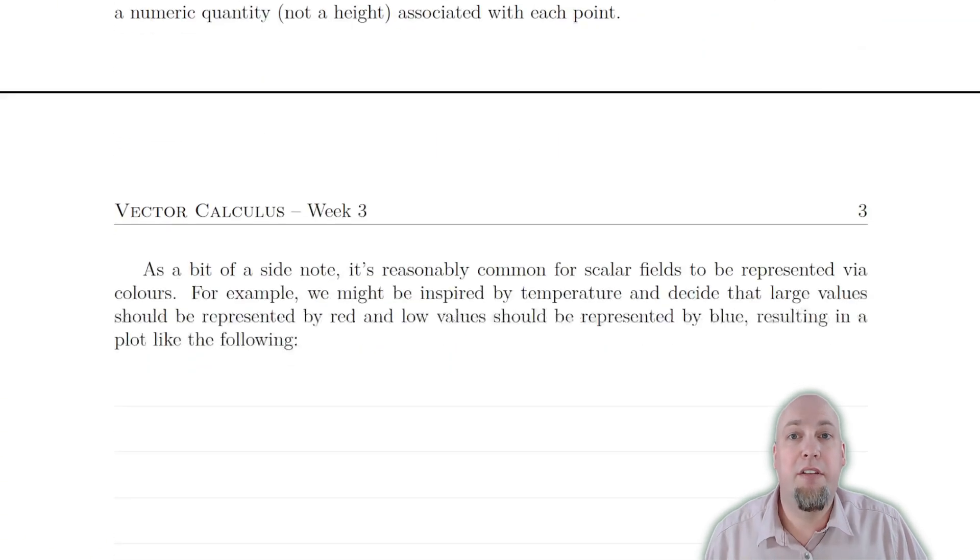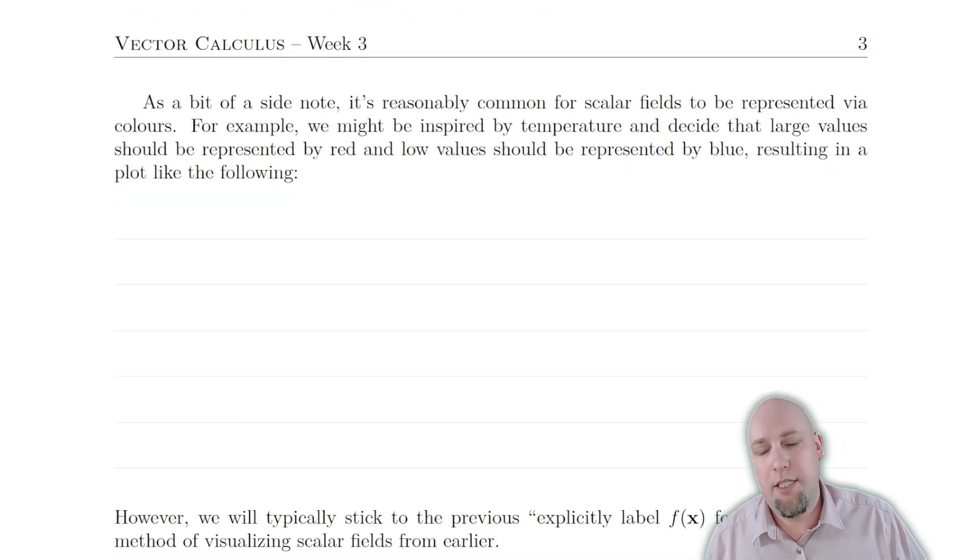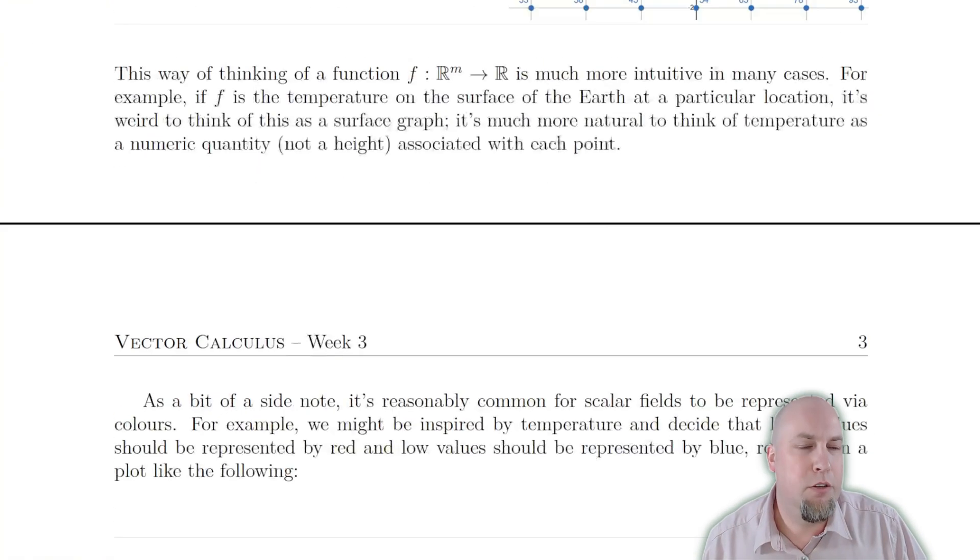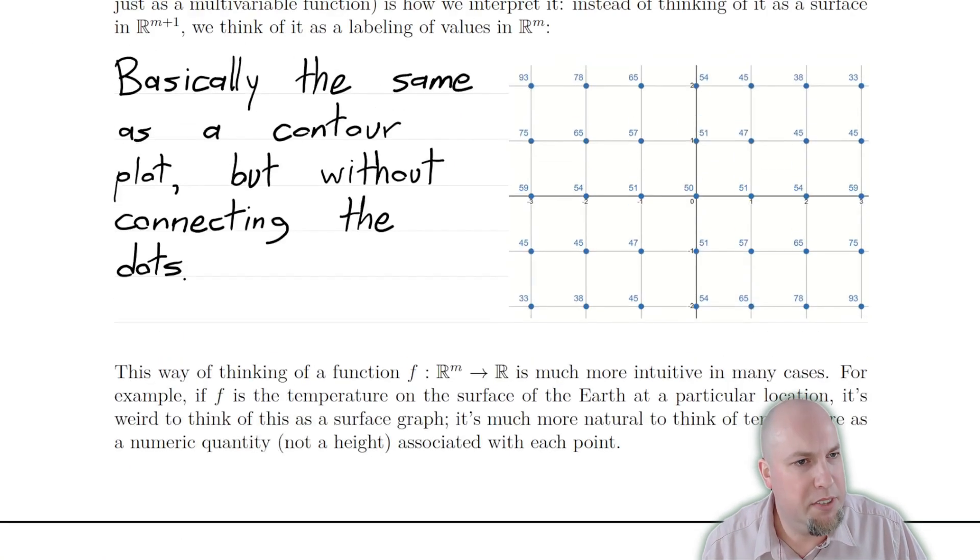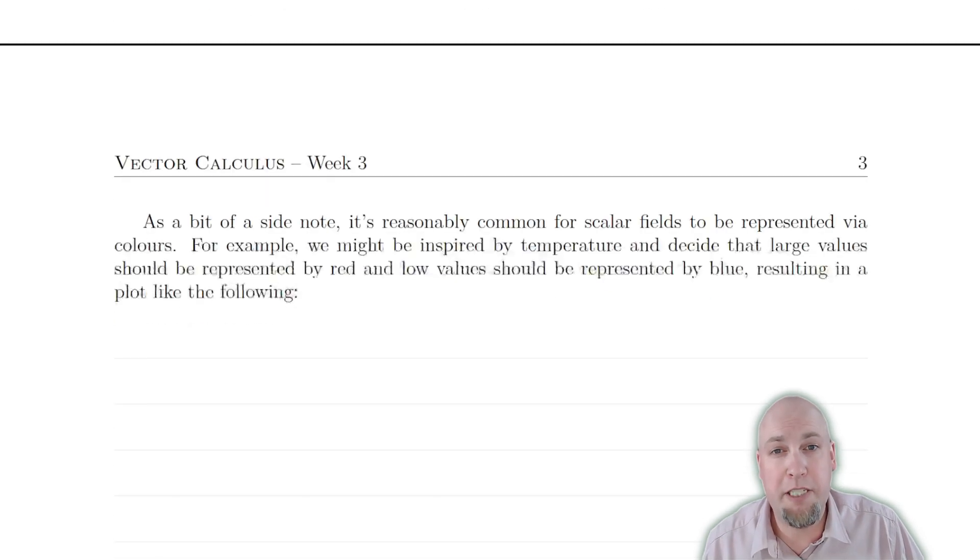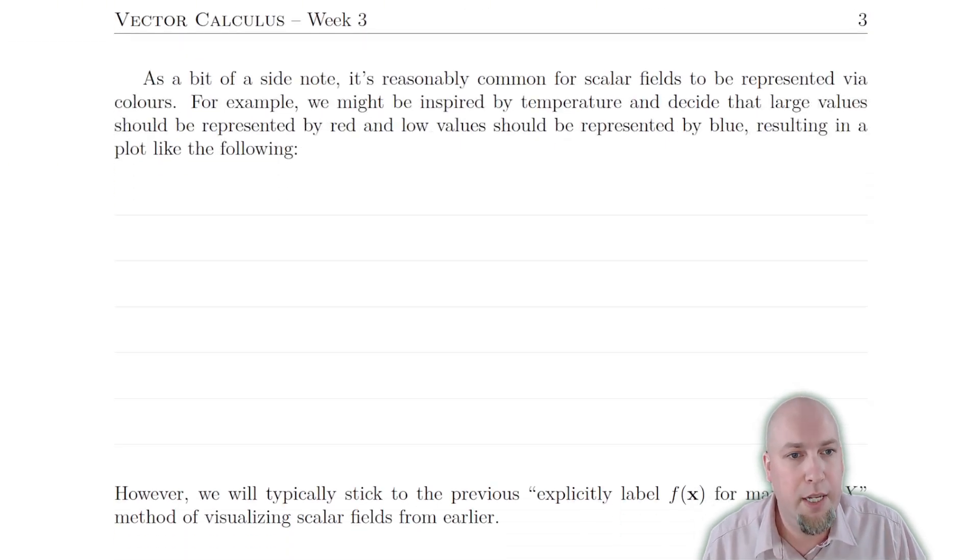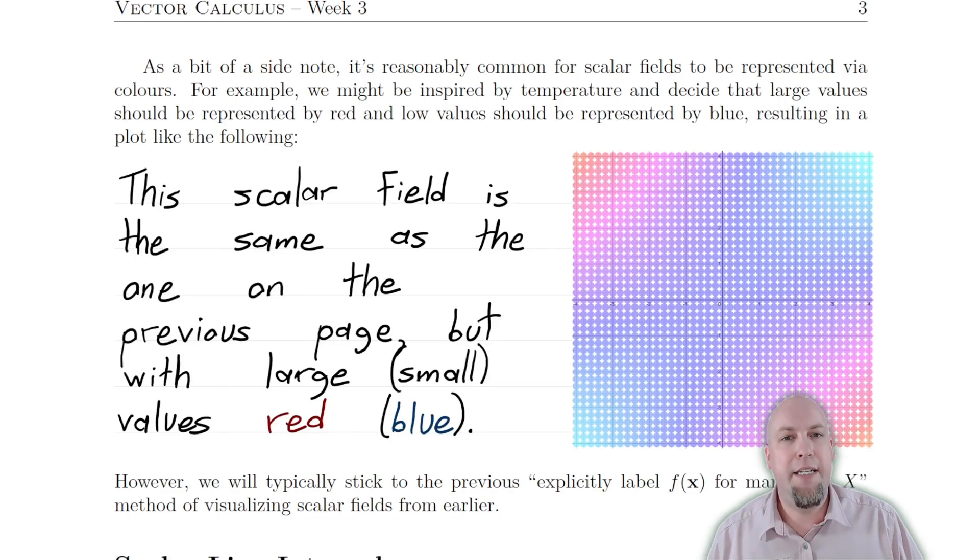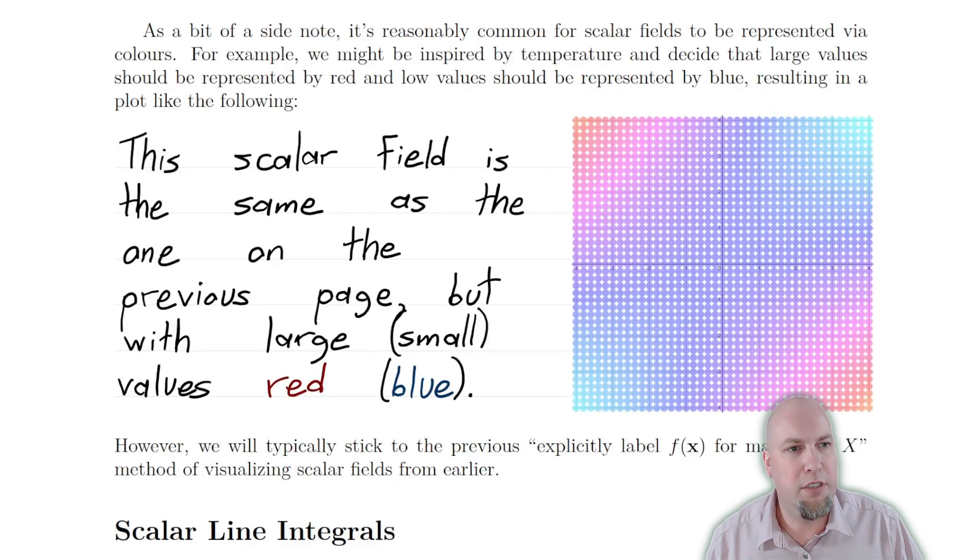All right, fine and dandy. There's a third way of thinking about these scalar fields as well. And that is just instead of drawing all these points and labeling numbers associated with them, what you do is you pick a color scheme. Again, we're going to label points on the input grid. It's still just going to be a two dimensional picture if m is two. Except this time, instead of labeling a number on each point corresponding to the function values, what we're going to do is label a color on each point.